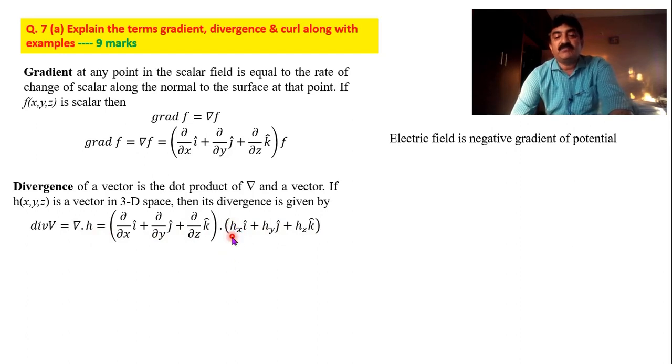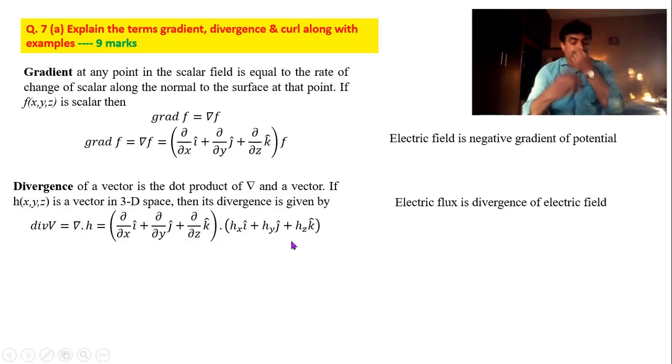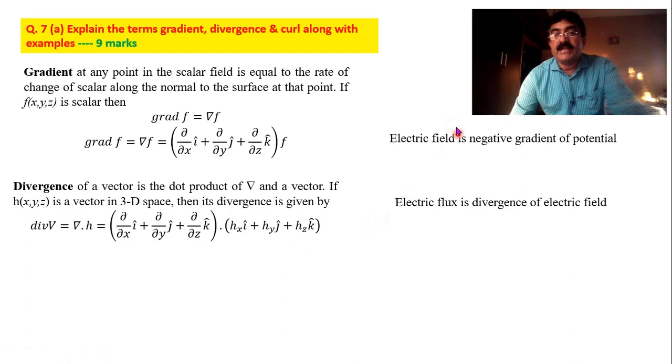This parameter is scalar, this parameter is vector. Therefore it is H_x i + H_y j + H_z k like that. So definition: divergence of a vector is the dot product of del and a vector. It is given by this equation. Example: electric flux, magnetic flux etc. Flux lines are coming out, therefore it is a divergence. So divergence finally it is a scalar quantity. Gradient finally it is a vector quantity. Electric field is a vector quantity. Electric flux is a scalar quantity. It must be a scalar quantity because I am taking the dot product.